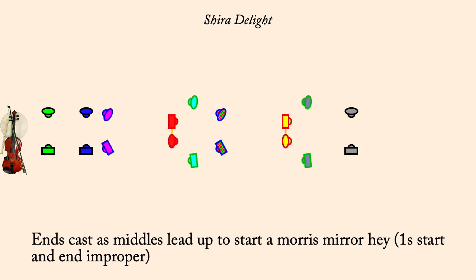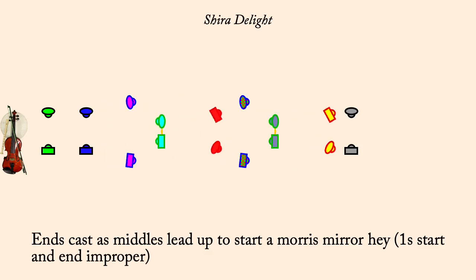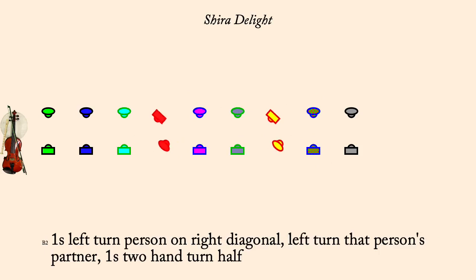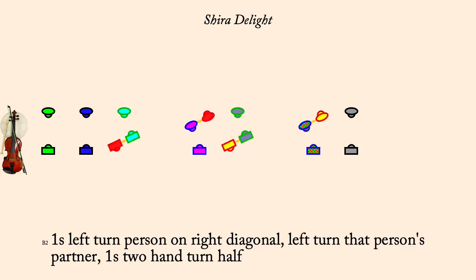Ones left turn person on right diagonal, right turn their partner, ones two-hand turn half.